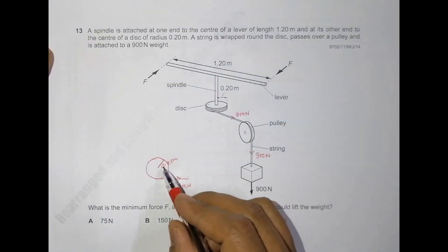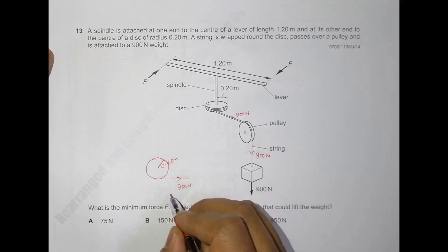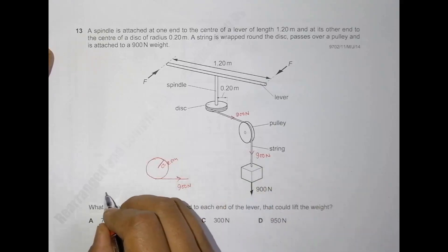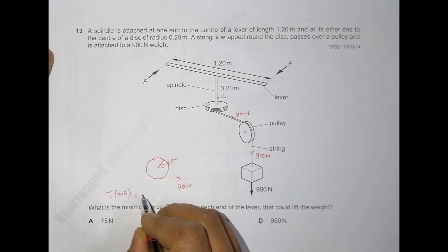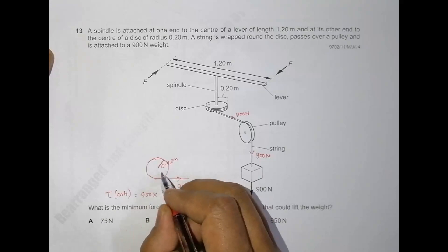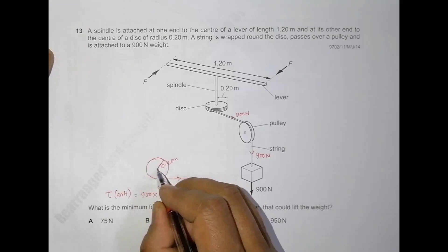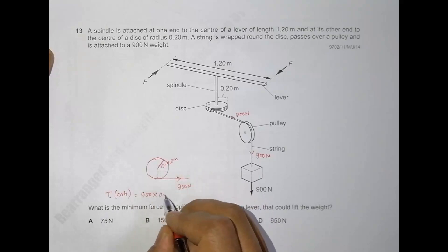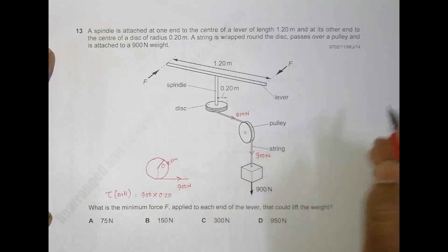The torque it experiences - if I look from upward, it is tau anti-clockwise. This is anti-clockwise, equal to force 900 Newton, and the perpendicular distance here should be equal to the radius, 0.20. This is tau anti-clockwise on the system.